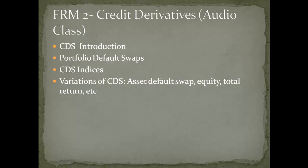The CDS is similar to an insurance whereby the protection buyer makes a premium payment to the protection seller in exchange for a contingent payoff in a default or other credit event. It's not always default — it could be a credit event as well. Many variations on CDS exist including asset default swap, equity default swap, total return swap, and credit linked notes. We will look at differences in payout and risk transfer between standard, Nth-to-default, first-to-default, and senior and subordinate baskets.